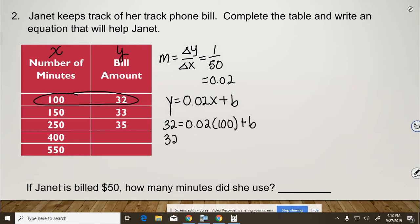So 32 equals 2 plus b, because 2 cents times 100 is going to be $2. Subtract the 2, and b equals 30.